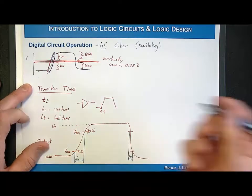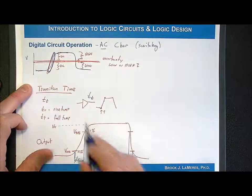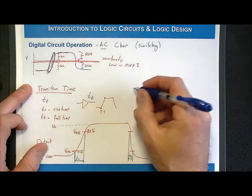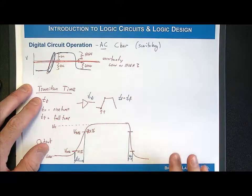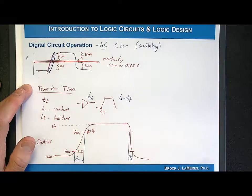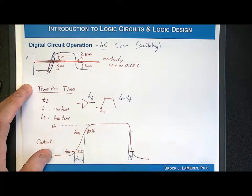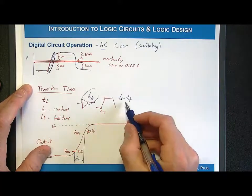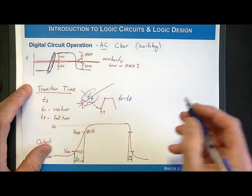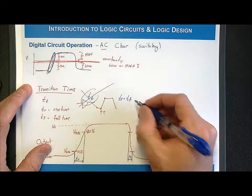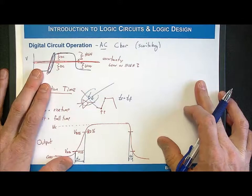Sometimes when you're given the specifications for a device, they might only give you the transition time. What that implies is that the rise time and the fall time are the same or very close to each other, so they didn't bother giving you both. In this drawing, you would have a slower rise time than fall time. But if you're only given the transition time, they're saying rise and fall are symmetric. If they give you both TR and TF separately, they're calling out that you have a different low-to-high versus high-to-low time.